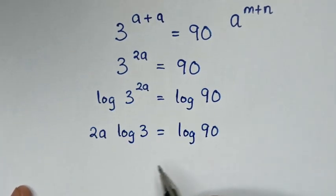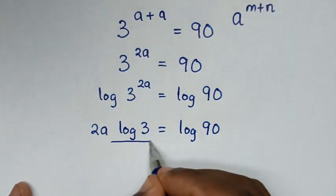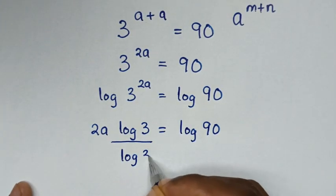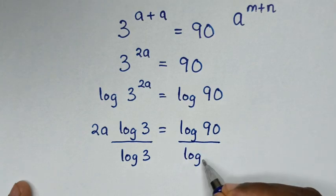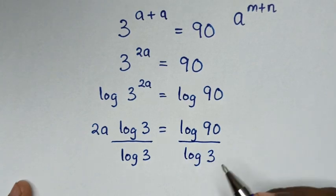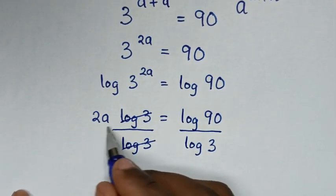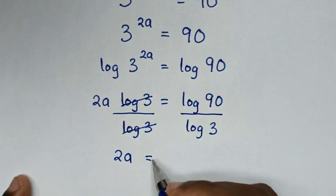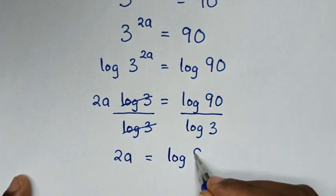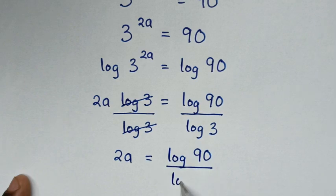Then we will divide by log(3) on both sides. The log(3) terms cancel, and it will be 2a is equal to log(90) over log(3).